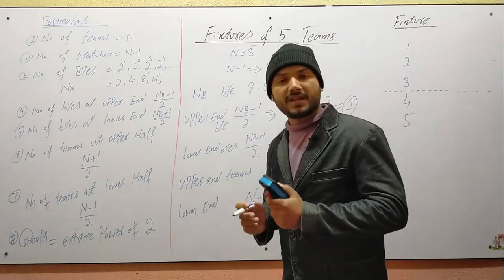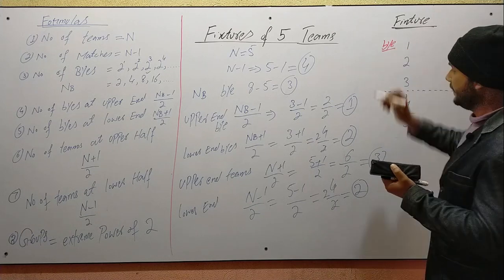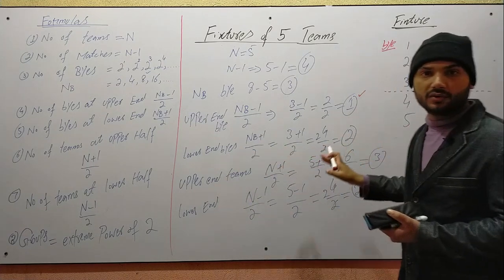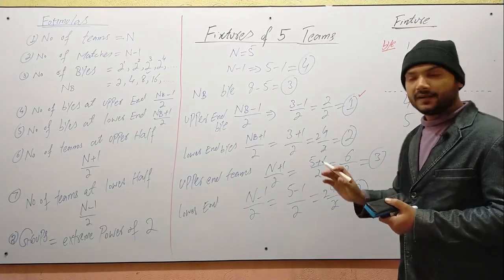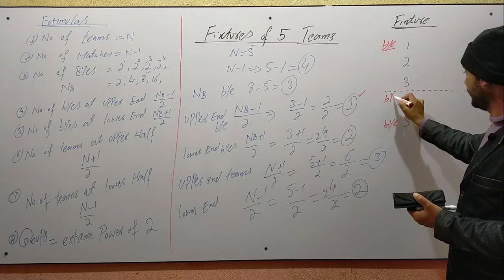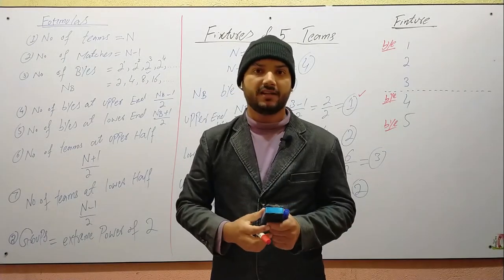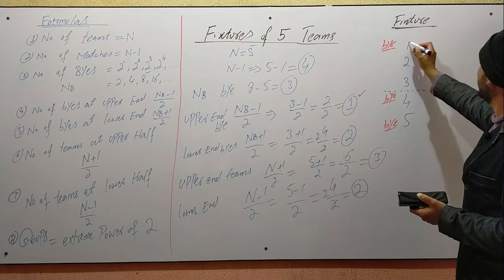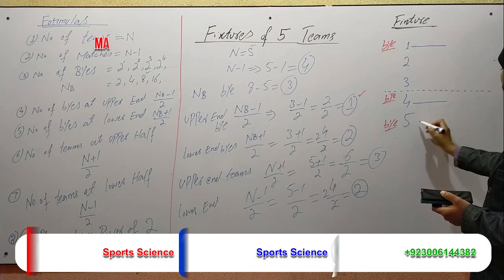Now we have to decide which teams get byes. In the upper half, the first and last team get a bye. So team number 1 gets a bye. In the lower end, two teams get byes — the last team also gets a bye. So team number 4 and team number 5 get byes in the next round. A bye means a team advances to the next round without playing.